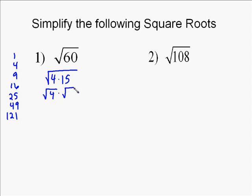And then you go look at that 15 and ask yourself, does 4 or 9 go into 15? No. So no perfect squares go into 15, so you know you're done factoring. And then you separate it using the product of square roots.